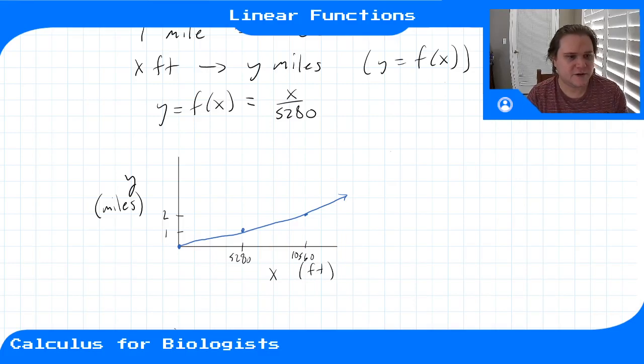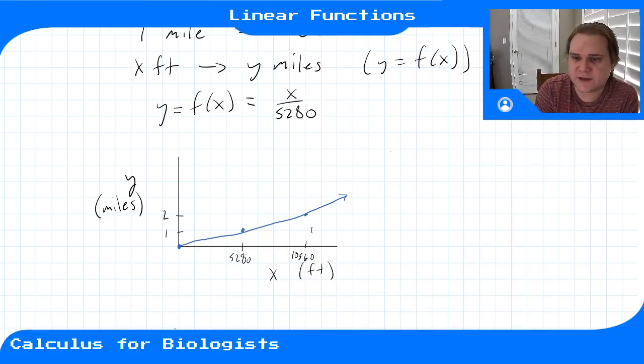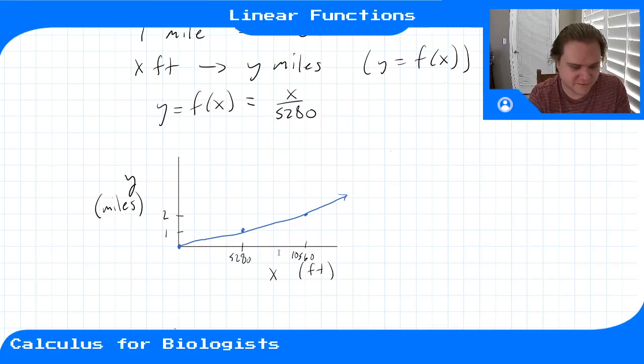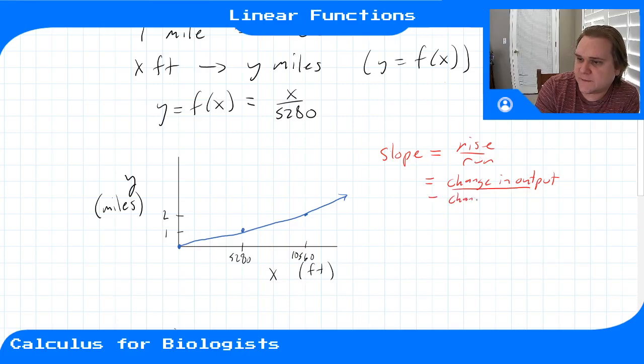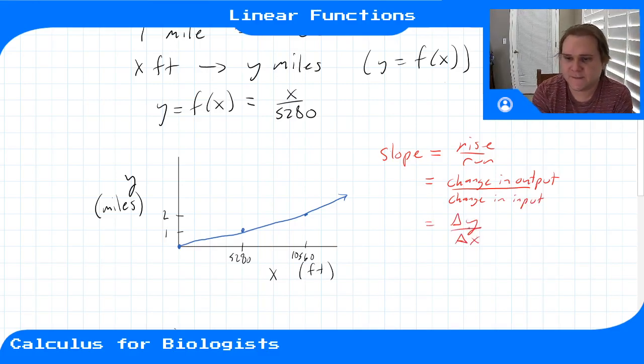When you're dealing with these linear functions, make sure you know what the slope is. Let's say we didn't know how to compute it from the formula, but just wanted to compute it from the graph itself. The slope, remember from a long time ago, is rise over run. Another way we can say this is the change in the output of our function over the change in input - our change in y divided by our change in x.